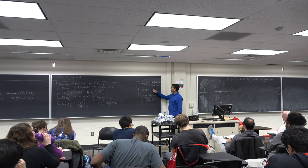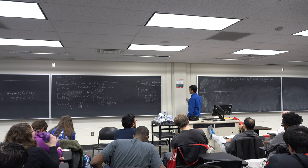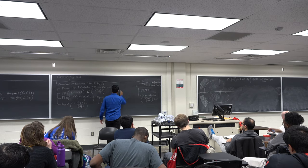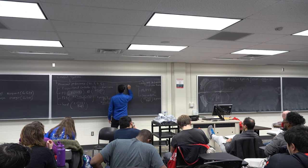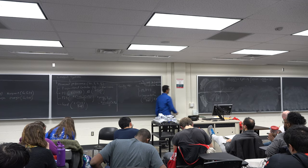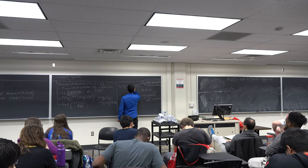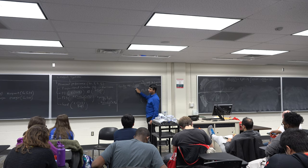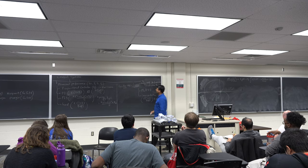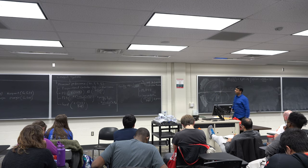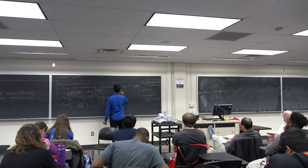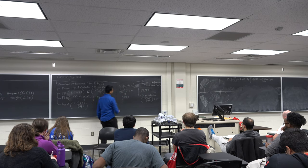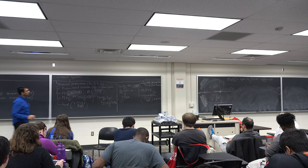Mathematically, ESS = lim[s→0] s·R(s)·1/(1+Gc(s)G(s)). For a PI controller, lim[s→0] Gc(s) = infinity, so the steady state error is reduced. In general, for PI and PID controllers, lim[s→0] Gc(s) = infinity, which leads to less steady state error.